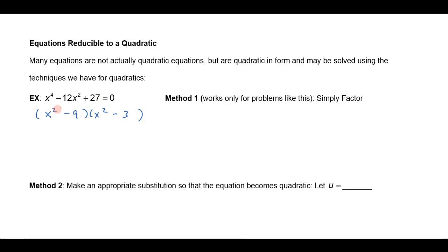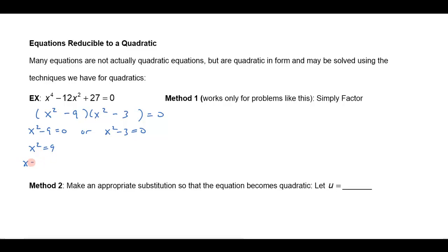Notice that that does give you a negative 3x squared and a negative 9x squared, which is negative 12x squared plus 27. And then I can just set each of these factors equal to 0: x squared minus 9 equals 0, or x squared minus 3 equals 0. I could factor this one further as x plus 3 times x minus 3, or I could just bring the 9 over and extract the square roots. x would be plus or minus 3.